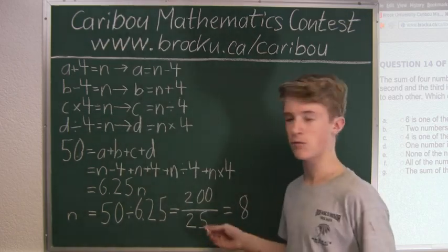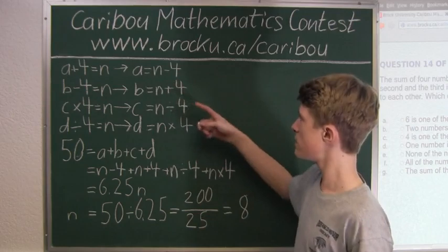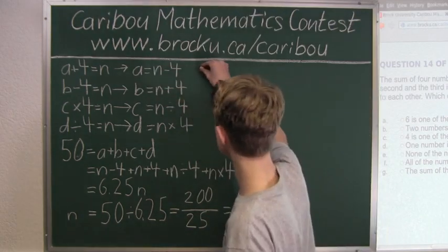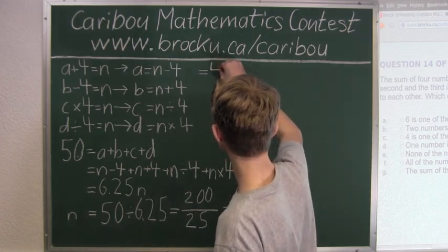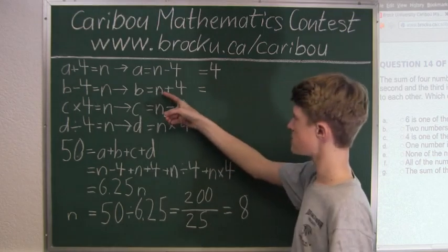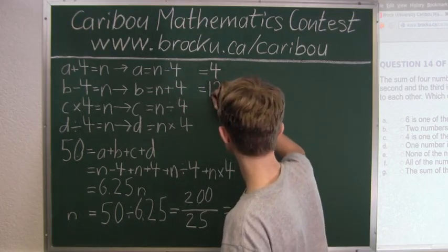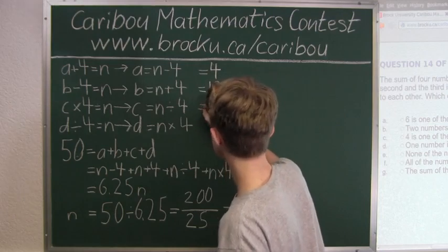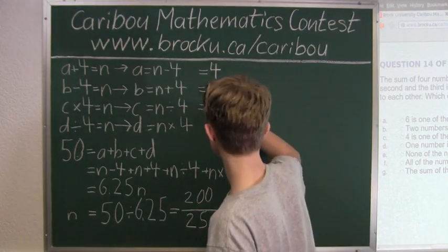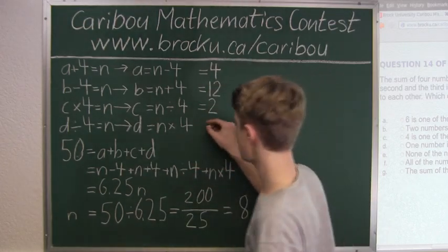Now that we know that N equals eight, this makes things much easier. Here we just have eight minus four, which equals four. Then we have eight plus four is twelve. Then we have eight divided by four is two. And now we have eight times four equals thirty-two.